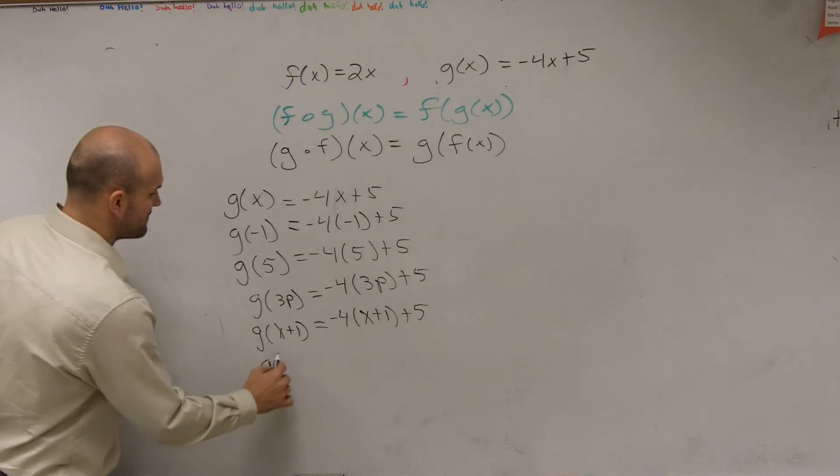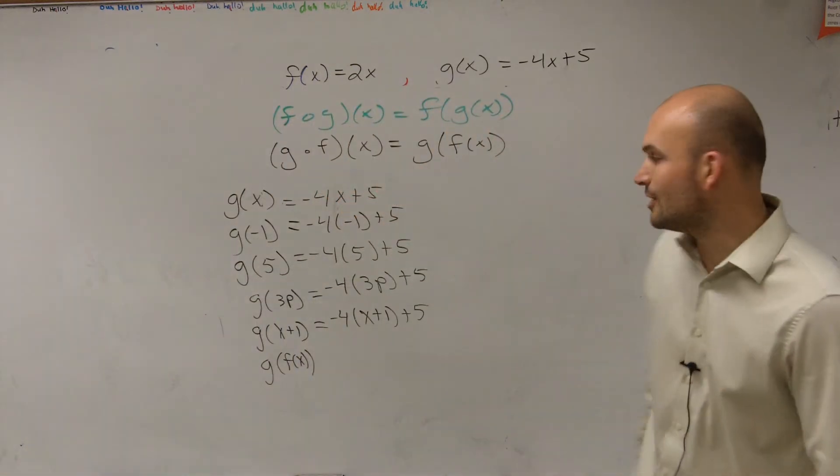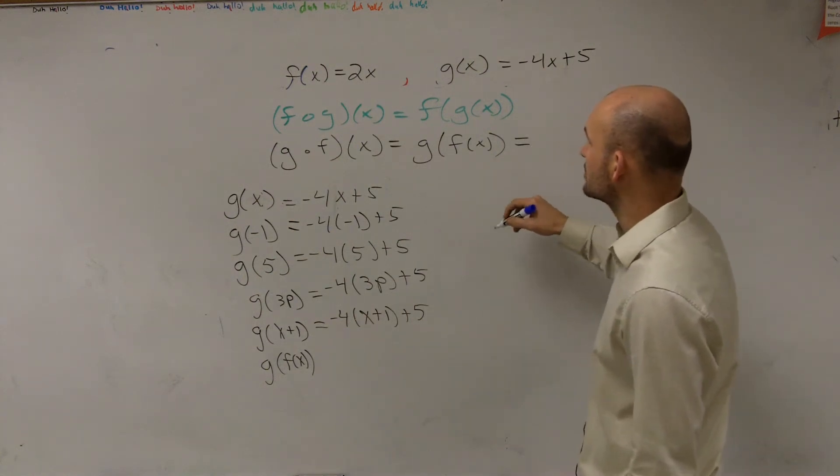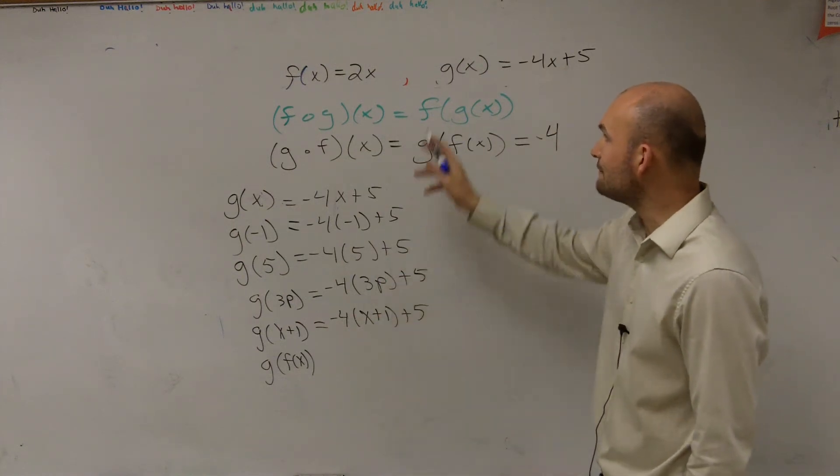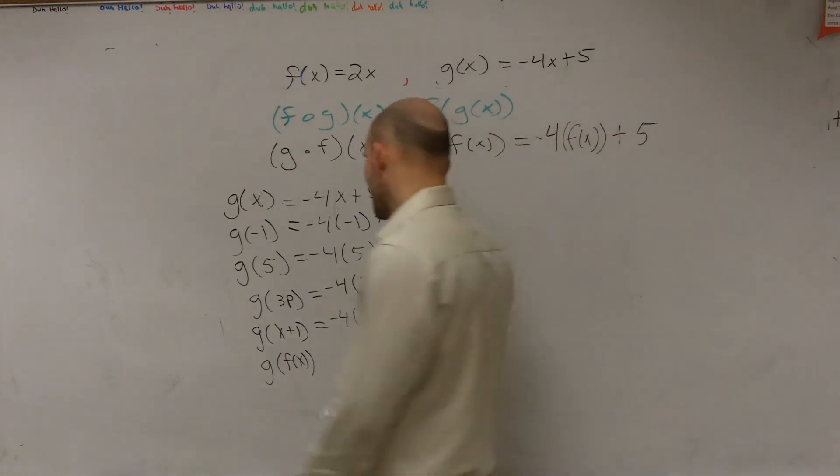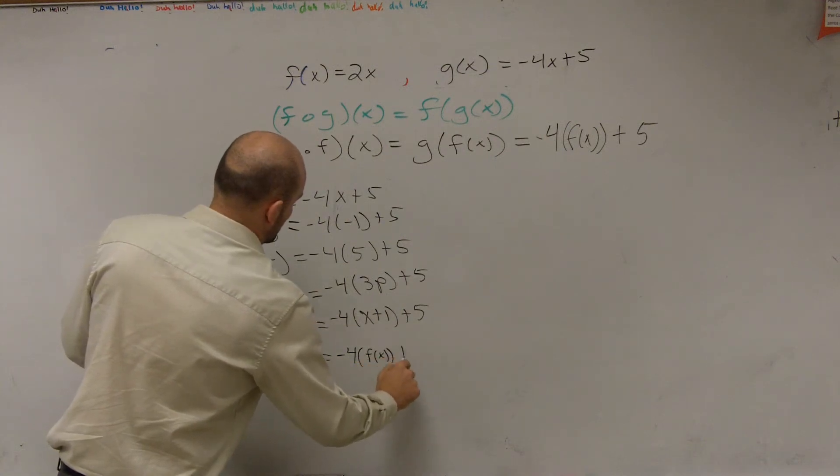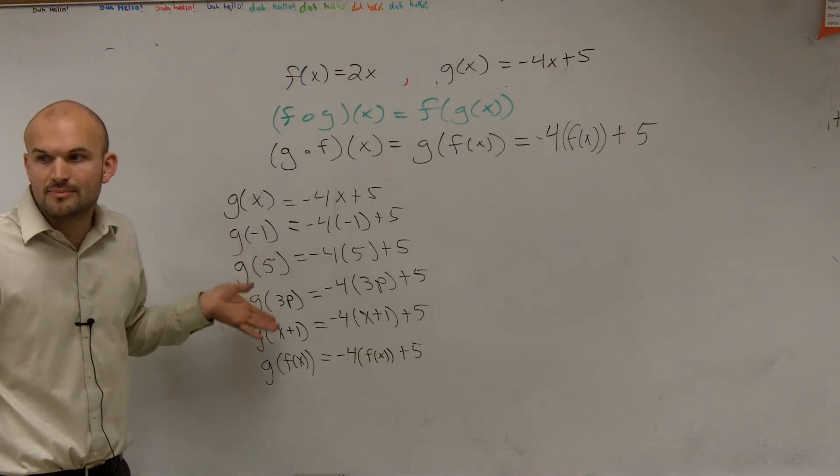So ladies and gentlemen, if I follow through this, if I follow this exact same pattern, and now I say what is g of f of x? Well, what you're going to do, g of f of x equals whatever your g of x is. Then, you're going to put now a f of x in for your x. Right? If I just follow this pattern, it's negative 4 times f of x plus 5. Does everybody kind of see how I'm just following the pattern? Just follow along the pattern.